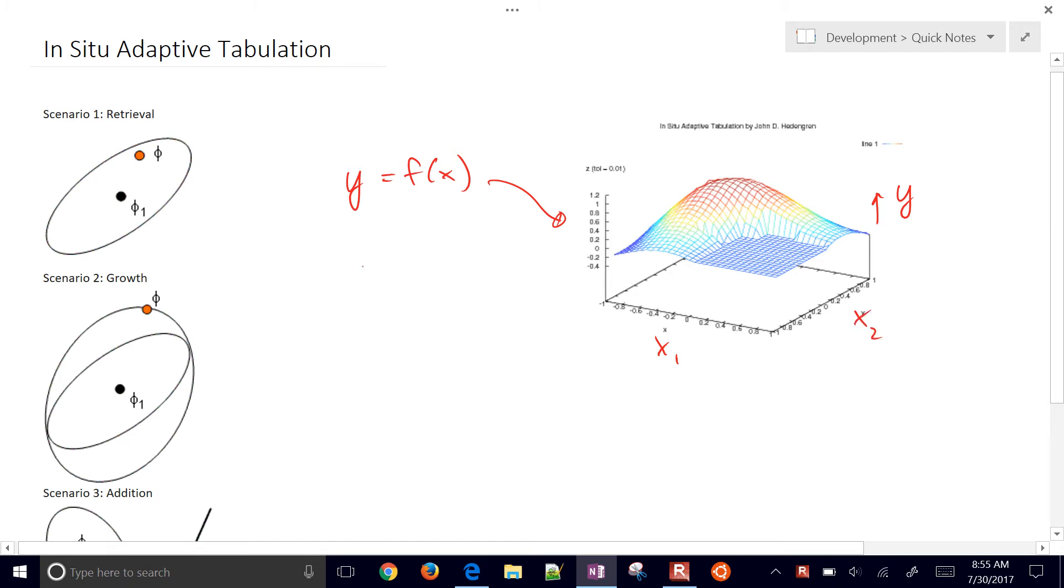So we have input dimensions of R^n, in this case n equals 2, and then output dimensions y is in the real vector space R^p where p is equal to 1. So you have two inputs and one output that you're trying to approximate.